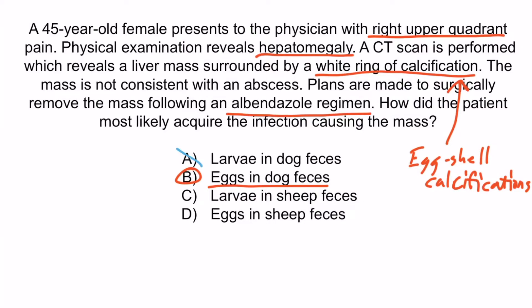Choice A is wrong because larvae are not ingested from dog feces — eggs are. Once inside the intestines, the eggs hatch and release larvae, but the larvae are not eaten. Choice C is wrong because sheep are the intermediate host, which means they can infect dogs, but humans don't get their infection from sheep. Choice D is wrong for the same reason: the sheep is where dogs get the infection, not humans. Humans get the infection from dog feces containing eggs. That's all you need to know about Echinococcus granulosus.